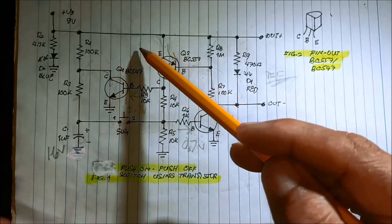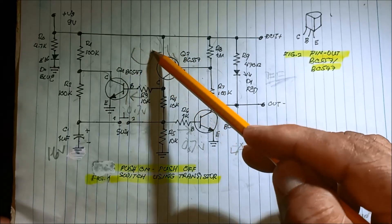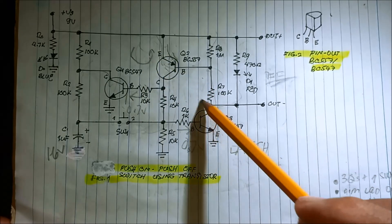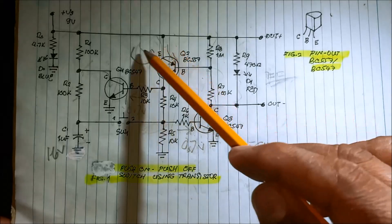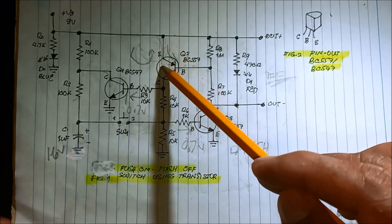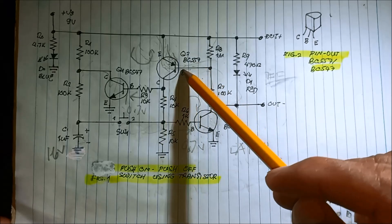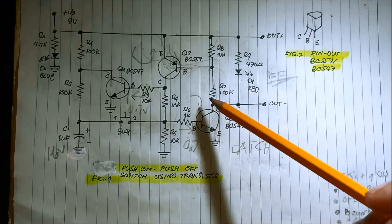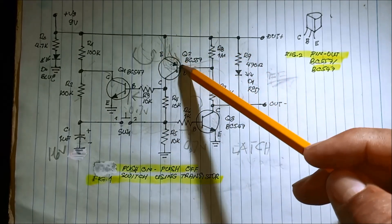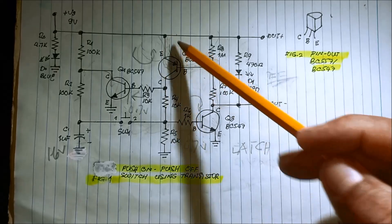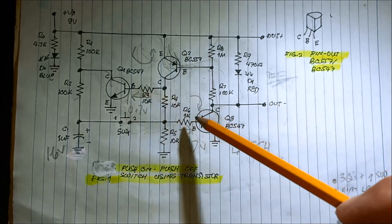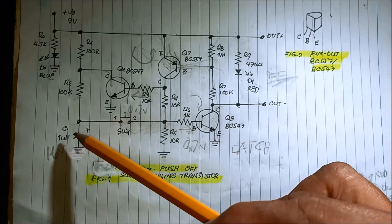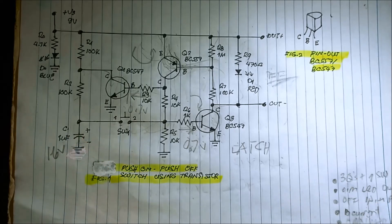It is negative because the current flows counterclockwise — from emitter to base. There is no current because the capacitor is charging. That is why there is no current flow, no voltage across emitter to base, no current to the base, and the LED remains off. That is the initial state of the circuit.